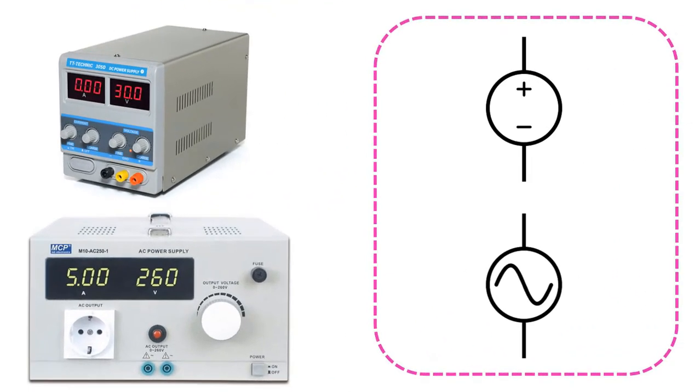Power supplies that can deliver direct current are indicated by the above symbol. Instead of this symbol, symbols used for batteries and cells are also used. It would not be right to separate completely.